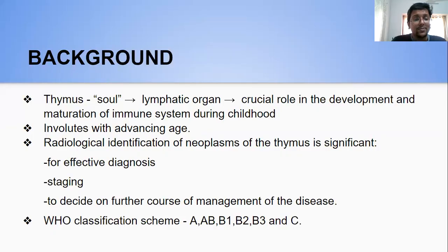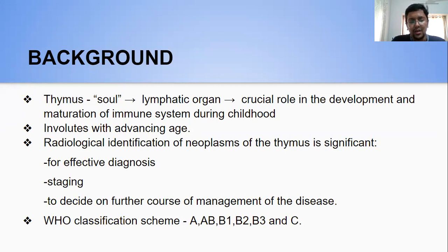The thymus, as the Greeks believed to be the location of our soul — hence the name — is actually a lymphatic organ crucial in the development and maturation of the immune system during childhood. It involutes with advancing age. Radiological identification of neoplasms of the thymus is significant for effective diagnosis, staging, and to decide on further course of management. A novel classification scheme by the World Health Organization divided the thymic neoplasms into types A, AB, B1, B2, B3, and C based on histopathological correlation.